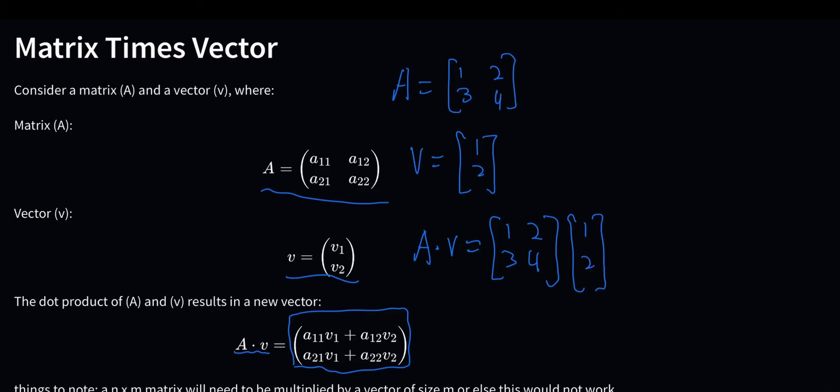So what do we do next? Next, we take this value, multiply it with this value, and then take this value, multiply it with this value, and then add those up. So that's what is shown right here. So that would look like 1 times 1 plus 2 times 2, which equals 5.